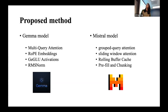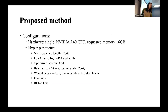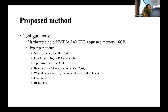During training we know the label and provide it; during inference we let the LLM generate the answer itself. The two models used are Gemma and Mistral. Both use multi-query attention, grouped attention, and sliding window attention to reduce parameters in self-attention. They also use RMS norm, profiling, and chunking to accelerate training and inference. I used a single NVIDIA A40 GPU requesting 16 GB.